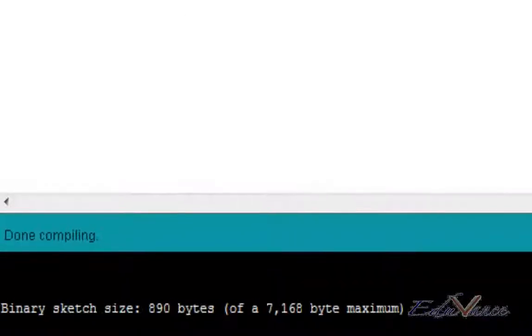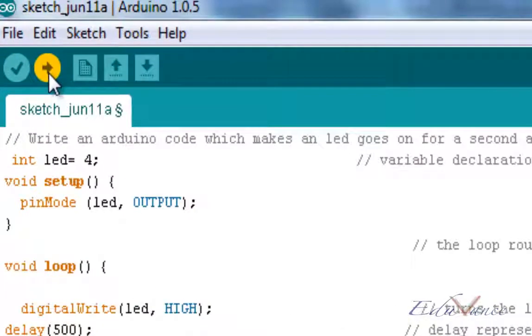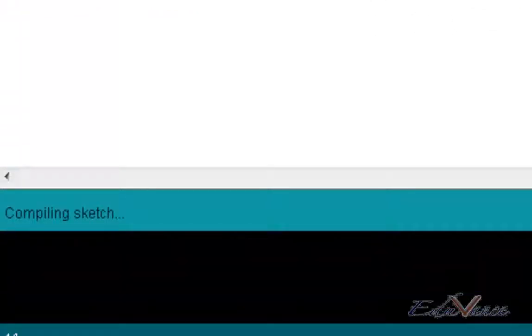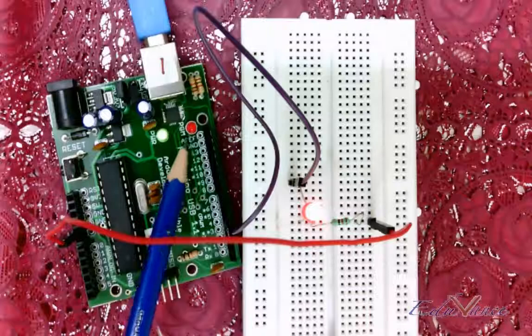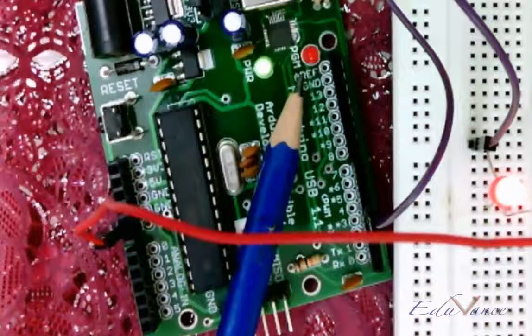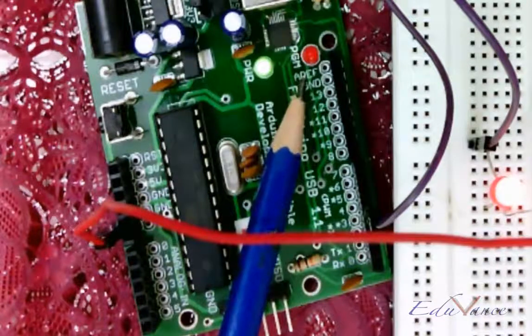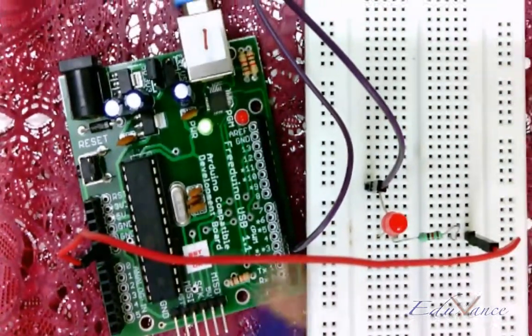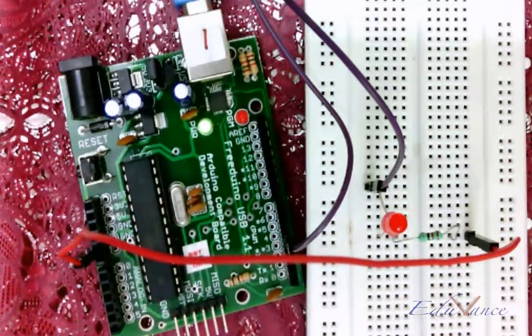After the program is verified, you go ahead and click on upload. Now, as you see on the board, when it uploads, the red light will blink, the red LED here. Now, this shows that it's getting programmed. You give it a couple of seconds before the Arduino starts functioning.